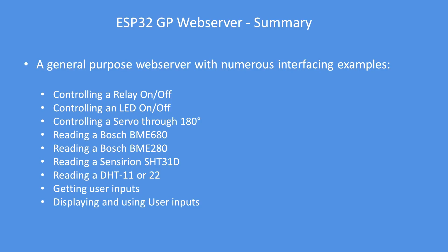So there it is — a general purpose web server. You can control relays on and off, just replicate the code as many times as you like. Control servos, read sensors — principally in these examples the BME680, BME280, SHT31D, and DHT11 or 22. Get user inputs, display user inputs, and graph data. I think that's a wide general purpose web server. I hope you found the video useful and the code useful — enjoy it please.